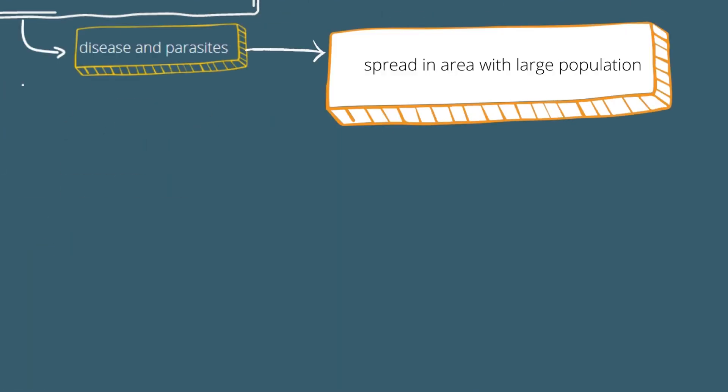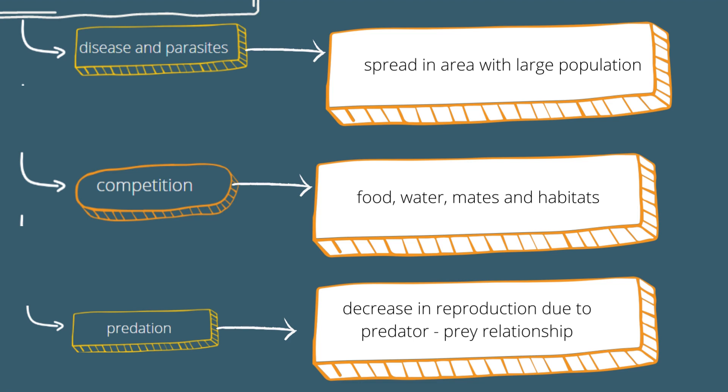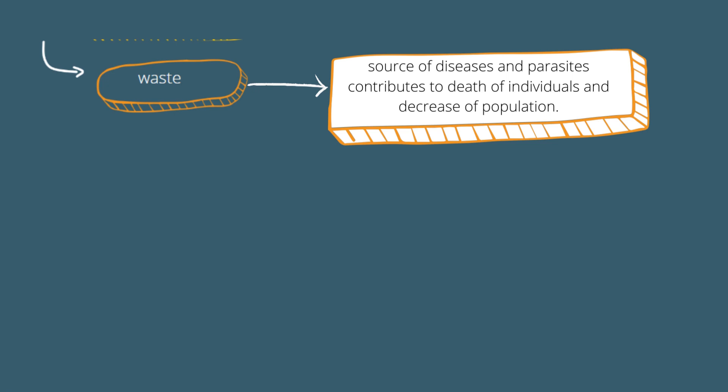Diseases and parasites are likely to spread faster in an area with a large population or at maximum carrying capacity, since individuals live close to each other. Also, competition for resources like food, water, mates, and habitats is heightened because of limited resources that cannot accommodate everyone. Predator-prey relationships are also affected in a way that the prey population decreases by being eaten by predators. When the prey population shrinks, the competition for food increases, which leads to the death of predators through starvation and a decrease in reproduction. When there is a decline in the predator population, prey will increase in population, and the cycle goes on. Waste accumulation is a source of diseases and parasites, which also contributes to the death of individuals and a decrease in population growth.